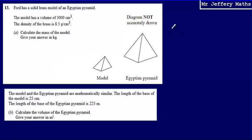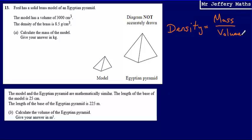In order to do this, we need to know that density is equal to mass divided by volume. Looking at the information we have, we have the volume and the density. So we can say that the density is 8.5 grams per centimetre cubed, and that equals the mass divided by the volume, which is 3,000 centimetres cubed.